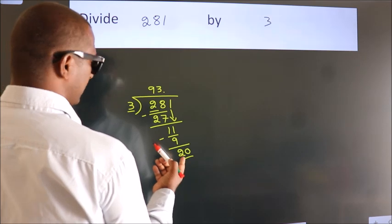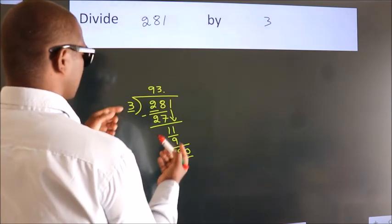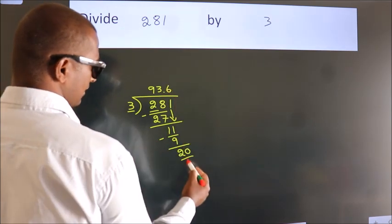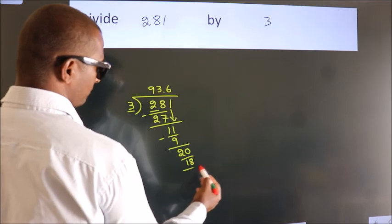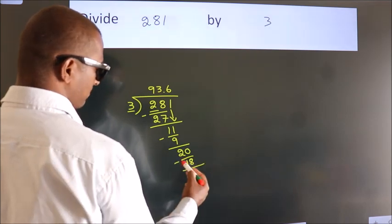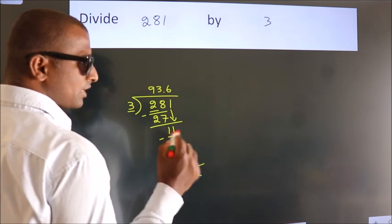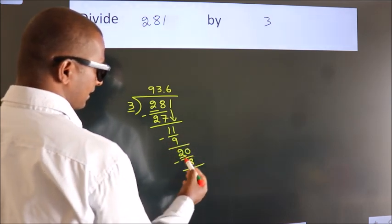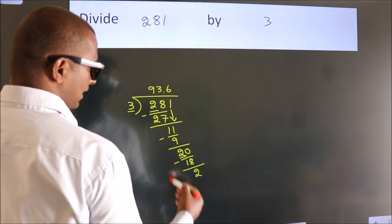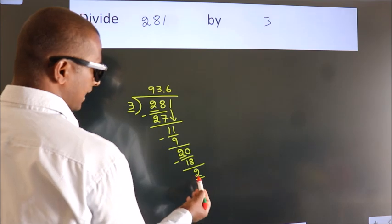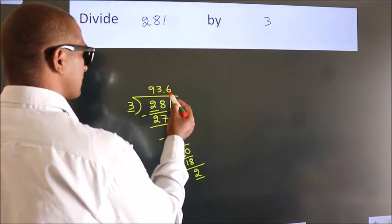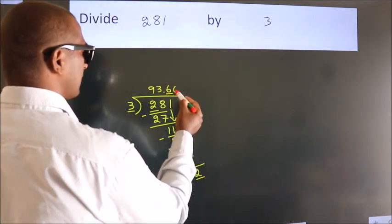A number close to 20 in the 3 table is 3 times 6 equals 18. Now we subtract. We get 2. Now you observe, we had 2 here and we got 2 again.